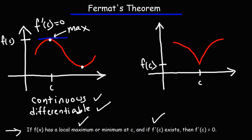Now let's look at the graph on the right side. So at point c, we have a local minimum. So the first part checks out.